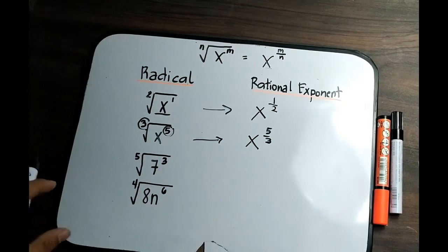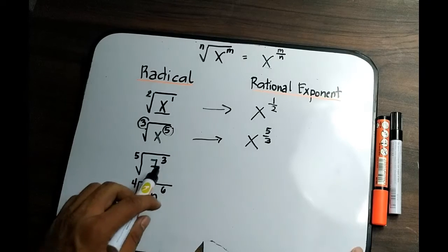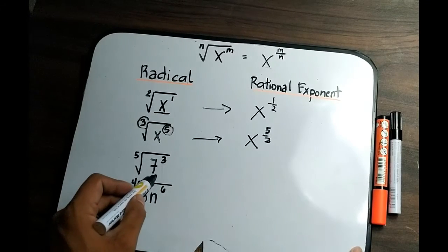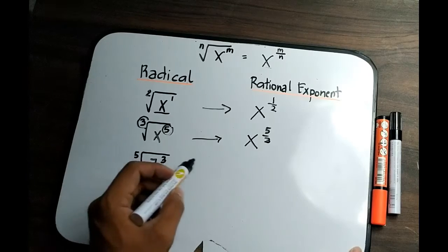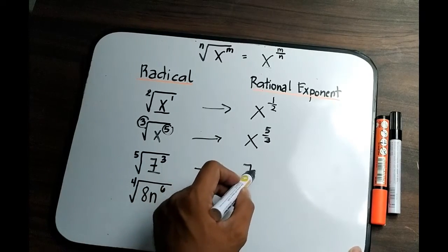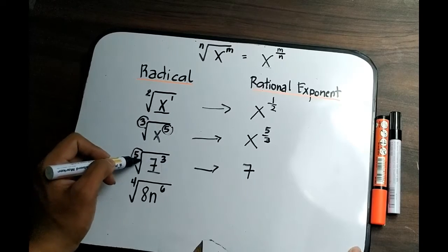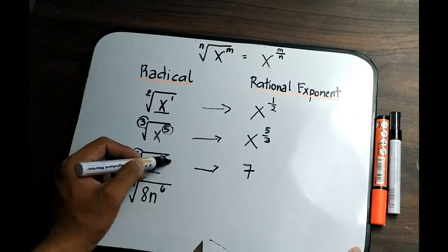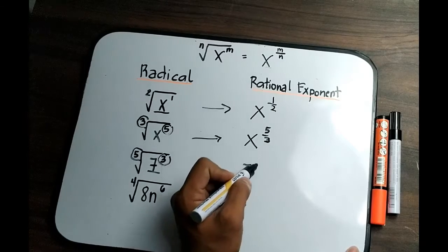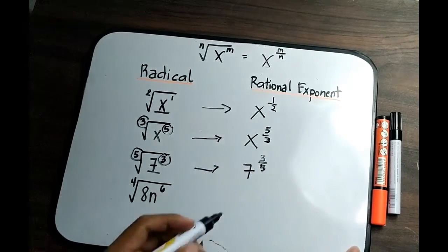Let's proceed with number 3: the fifth root of 7 cubed. The radicand is 7, so that will be the base. Your index is 5, and the exponent of your radicand is 3. Therefore, we have 7 raised to 3 all over 5.